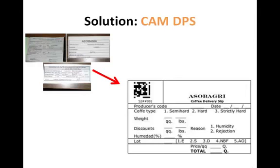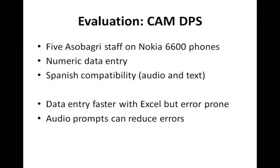At the time of the study, the service side which would collect and process the data had not been developed. From such a database, receipts, labels, and records could be printed. The authors measured execution time and error rates for data entry. Users entered data 15 seconds faster in Excel, but the average number of errors was twice as high.